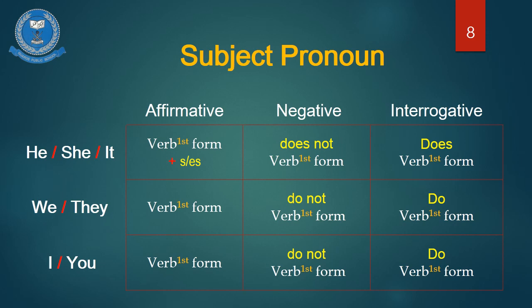Rules for subject pronouns are the same for affirmative, negative and interrogative. The key points to remember: when using singular subject pronouns like he, she, or it — for affirmative, S or ES must be added with the first form of verb; for negative, helping verb 'does not' will be used with the first form of verb; for interrogative, helping verb 'does' will be used with the first form of verb.